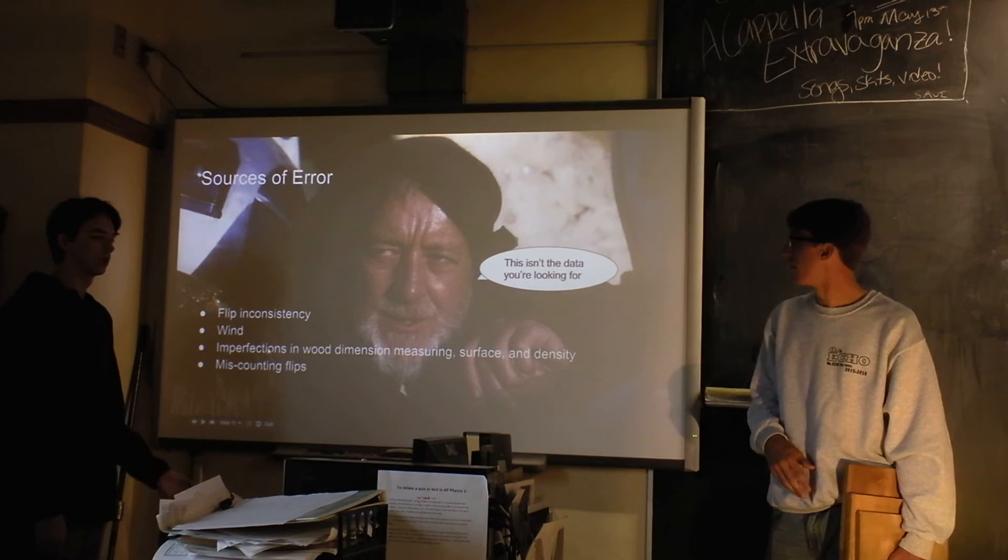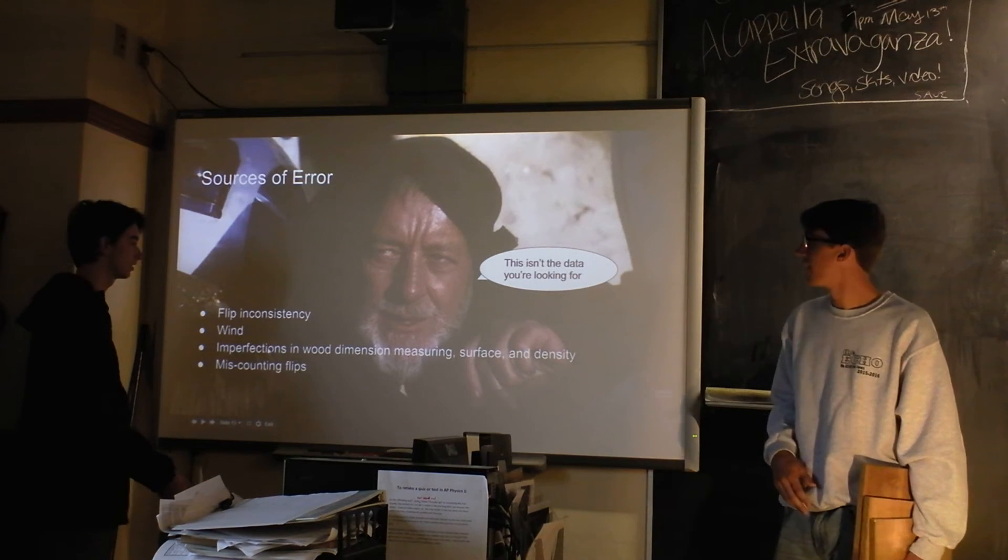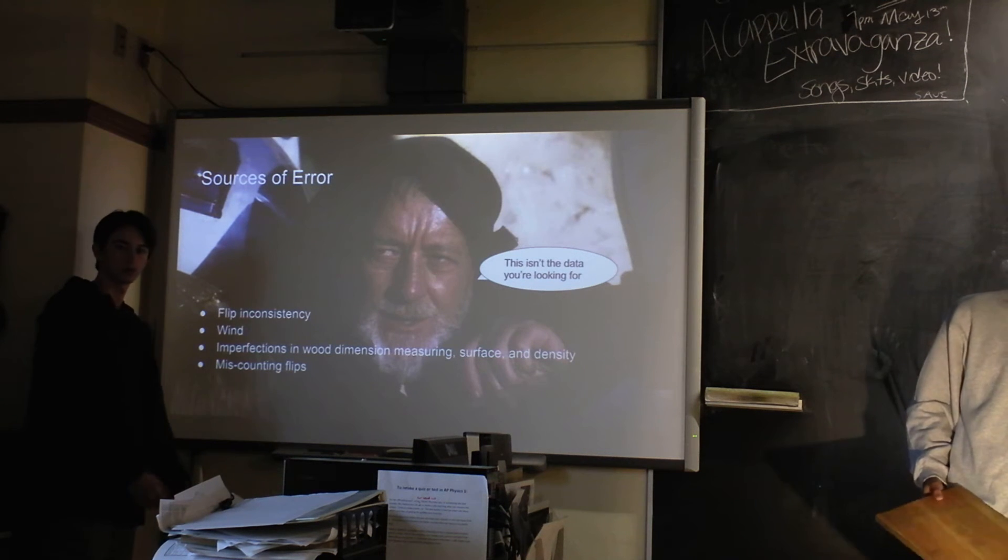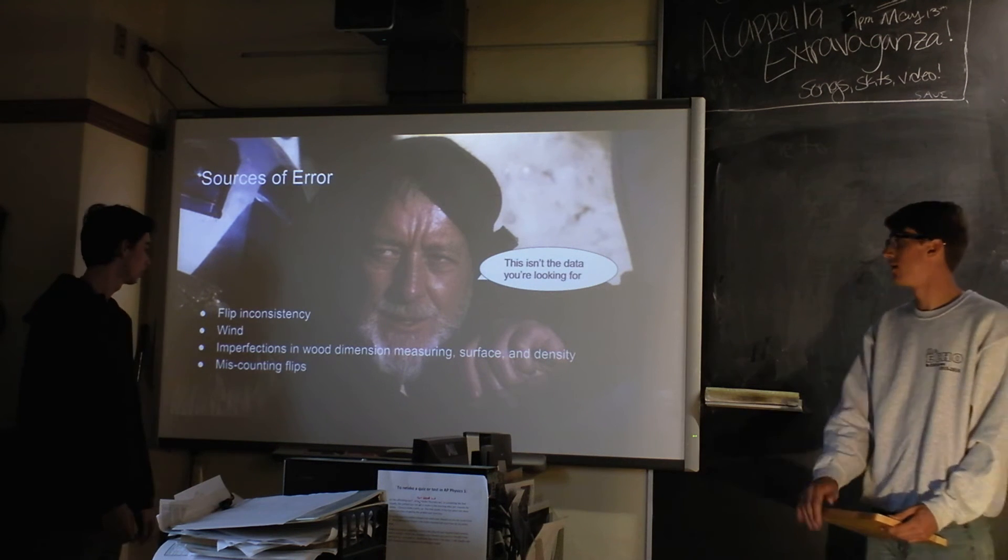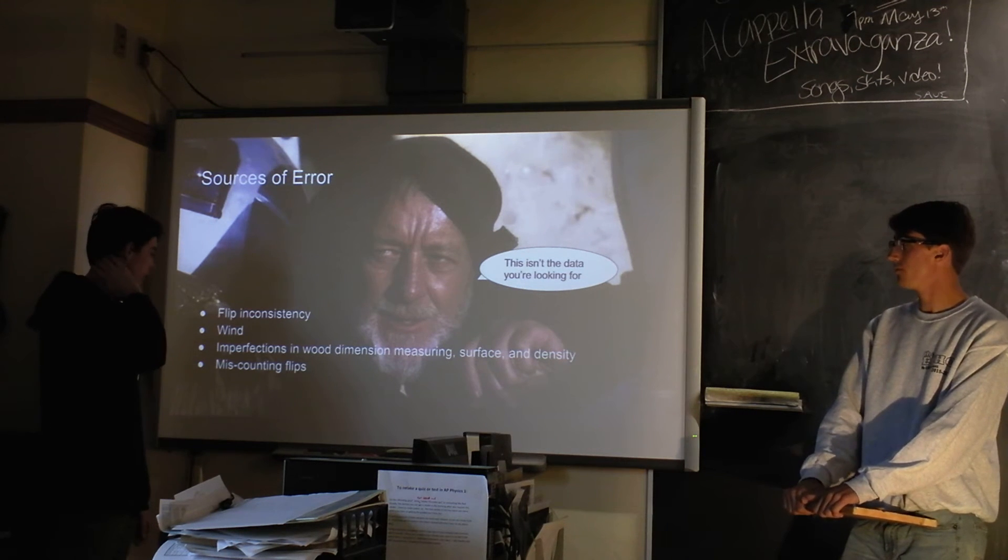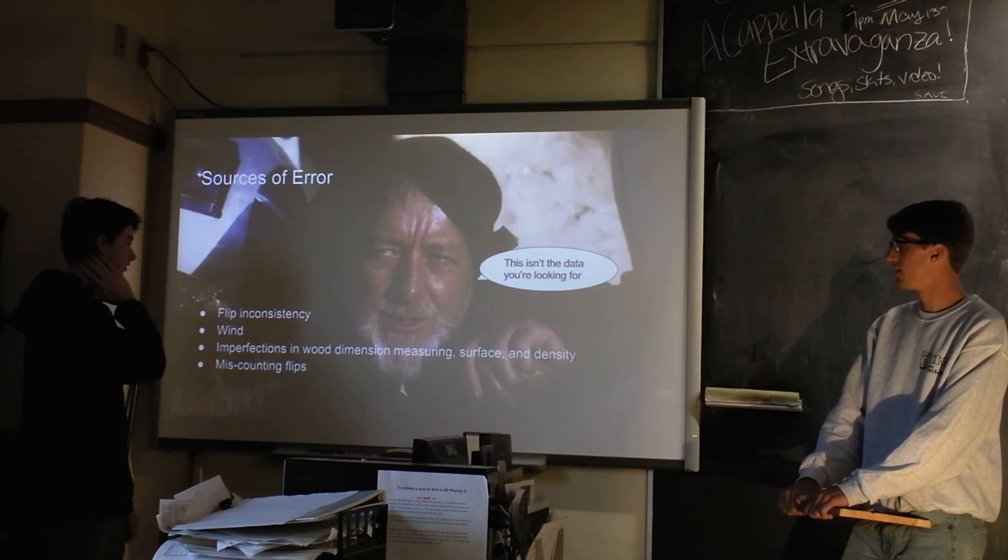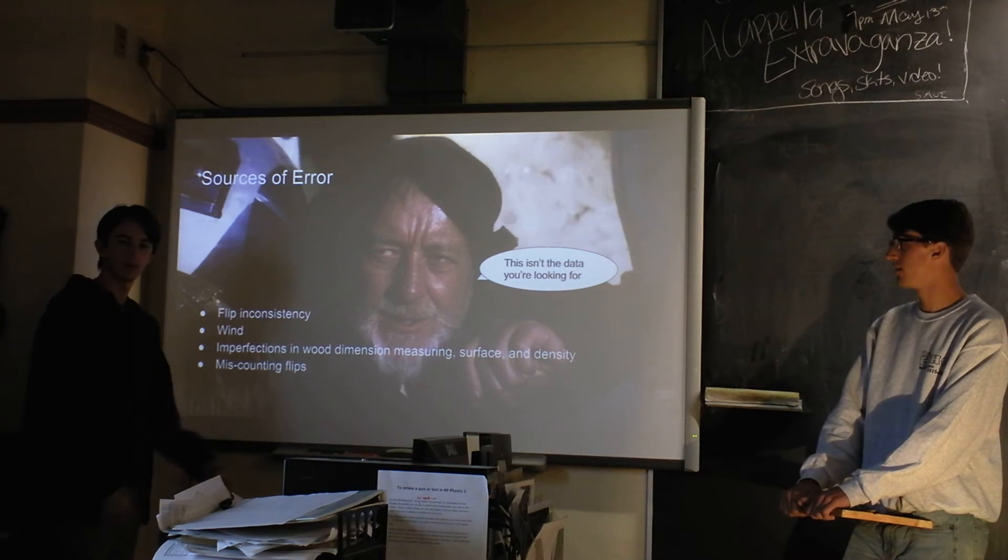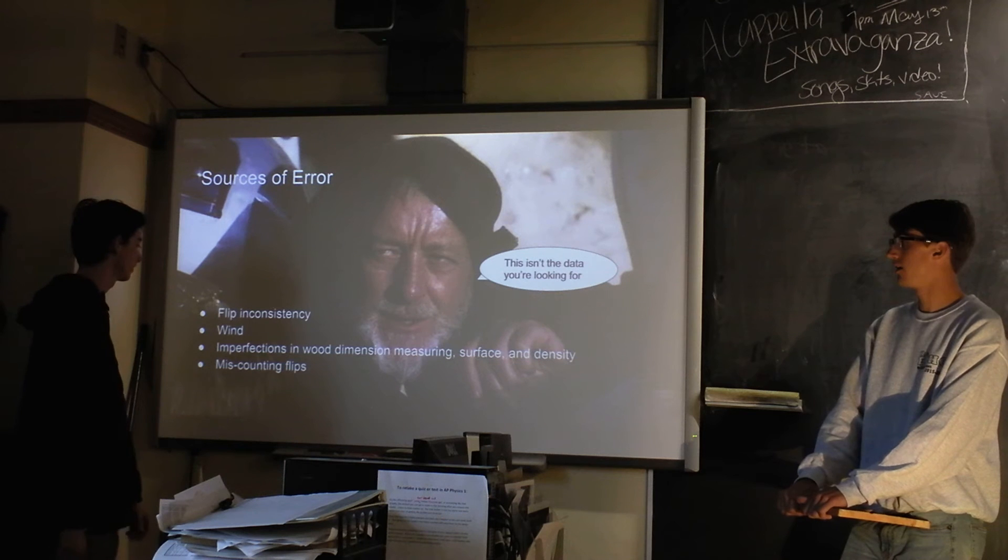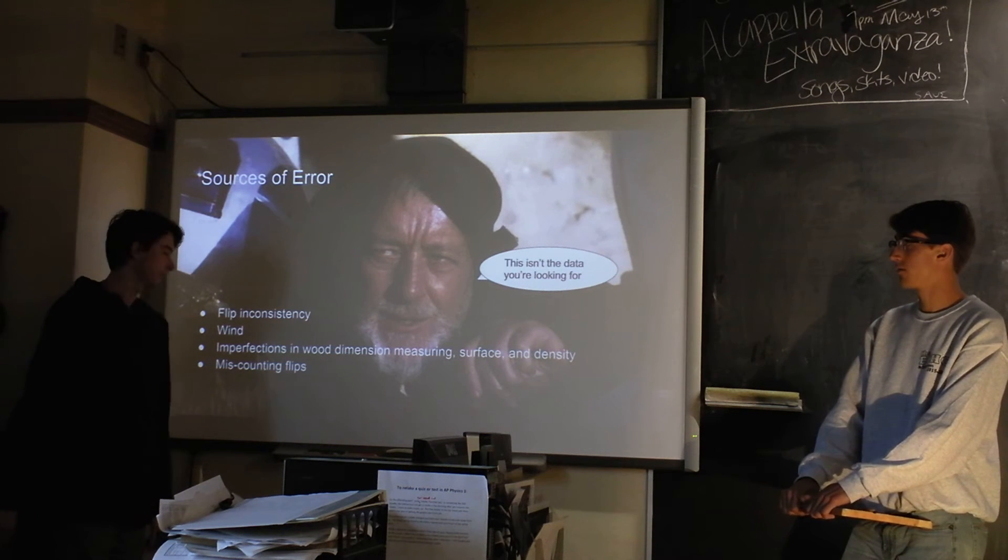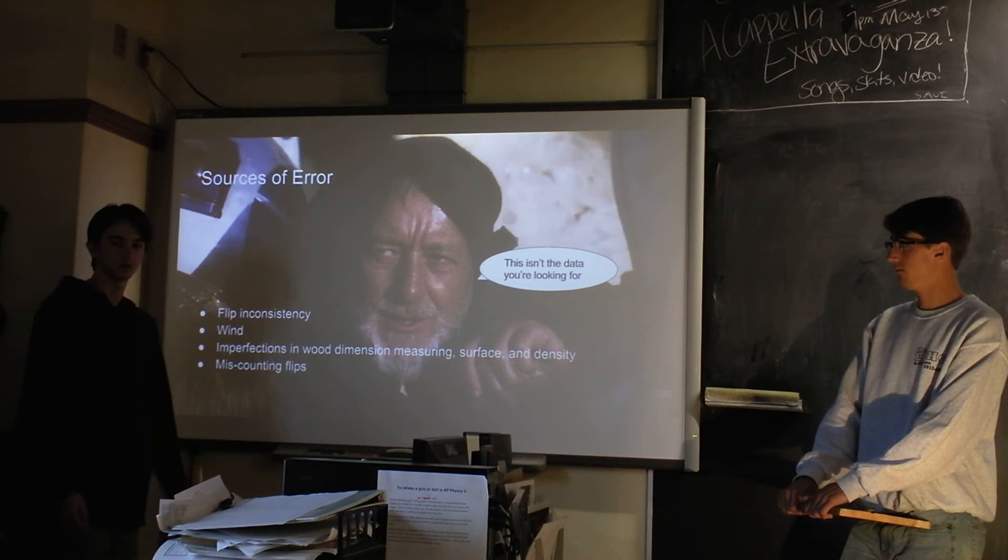And so from that we can conclude that our data supports the theory that when the width is an average of the length and the height, then the wood is least stable. Sources of error: wall flip inconsistency, because not every flip is the same. So some flips might make it, and wind could vary on different drives. Imperfections in the wood and measuring, density, and then it was kind of hard to analyze the flips, so that could contribute.